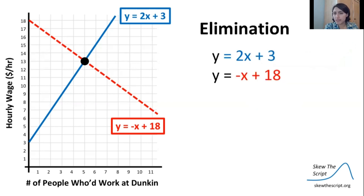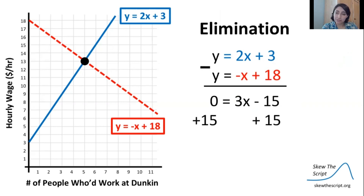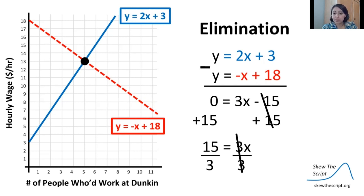Let's do the same thing using elimination as our method of solving our equations. We're going to go ahead and take our two equations, stack them together, and subtract them from one another. When we do that, the y's are going to cancel out. We're going to be left with 0 equals 3x plus 15. Now we just have a single variable equation. We take our 15 and add it over to the other side of the equation. We're going to have 15 equals 3x, and we can divide through by 3 in order to be left with 5 equals x.